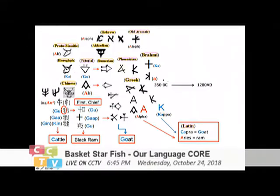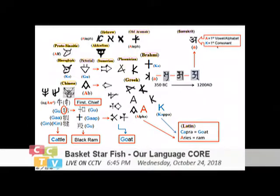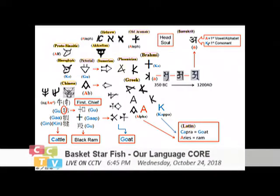From now on, from here to here, it's already known by the scholars — I just took it from some books which are already known. This is the actual mutation of the writing itself. From this form, from Brahmi becomes the classic Sanskrit, a very important Indian writing system. In the Sanskrit system, the A is the first vowel and the K is actually the first consonant, and it always relates to the head and the soul in meaning.